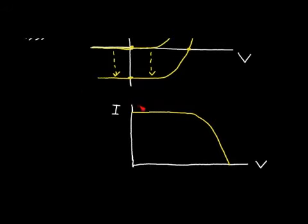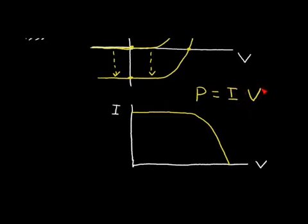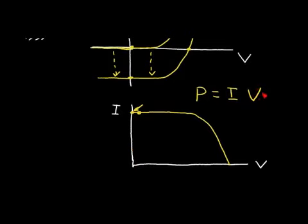The key goal of the solar cell is to extract power — useful work. Recall that power equals current times voltage. If we operate at the short-circuit point, we have no voltage across the solar cell, producing a large current, but since voltage is zero in the power equation, we extract no useful power.